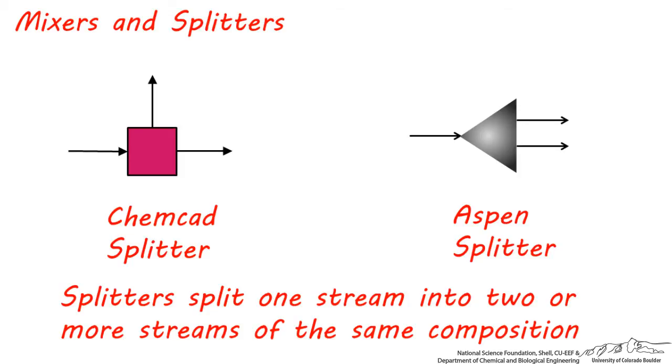This split does not have to be even, such as 50-50 or 33-33-33. The stream can be split in any combination, and the outgoing streams all have the same composition as the stream going into the splitter.